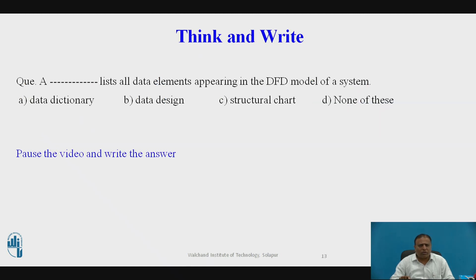Now, I am going to ask one question to all the students. You have to pause the video and write the answer. A dash lists all data elements appearing in the DFD model of a system. Option A, data dictionary. Option B, data design. Option C, structural chart. Option D, none of these. Pause the video and write the answer. Option A, data dictionary. A data dictionary lists all data elements appearing in the DFD model of a system.